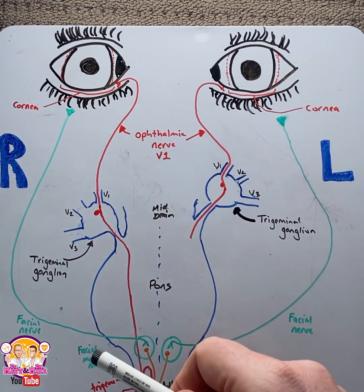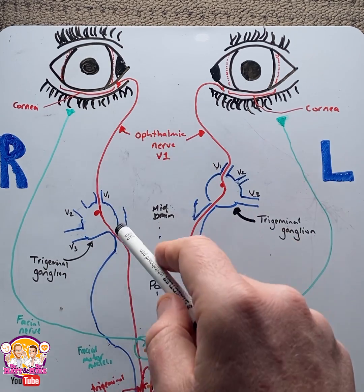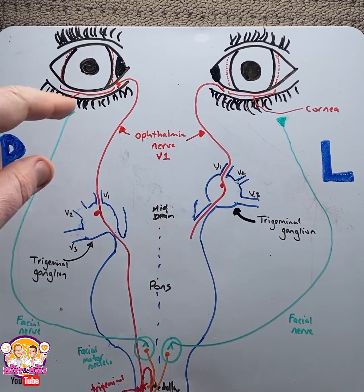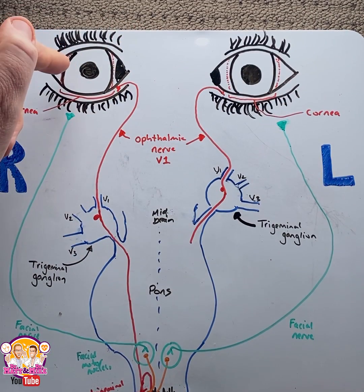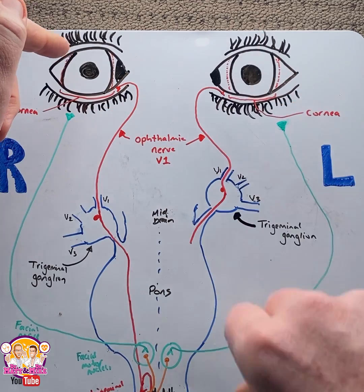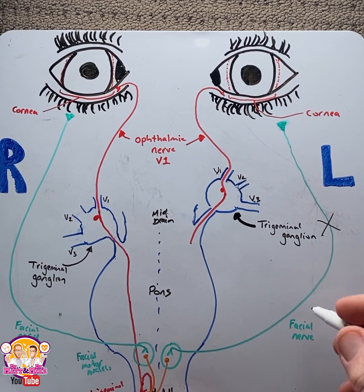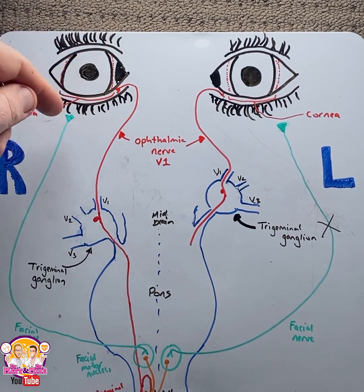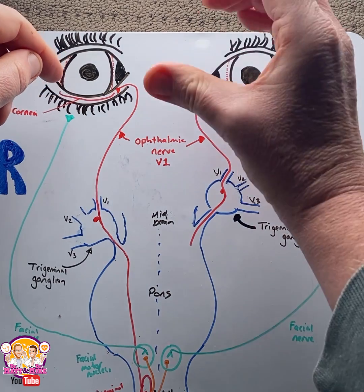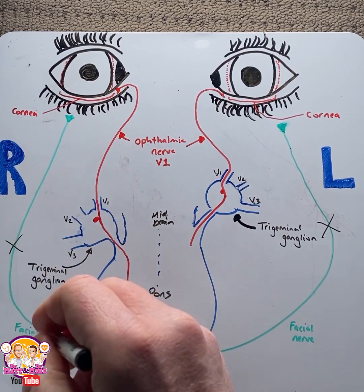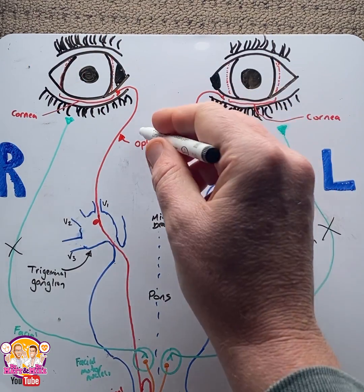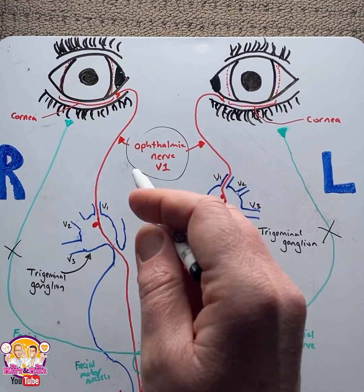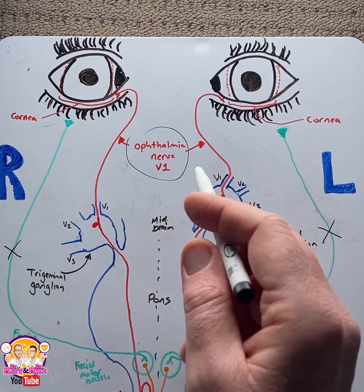Dysfunction of the corneal reflex may be due to a defect in the sensory or the motor component. When one eye is tested, both eyes should blink. When one side is stimulated and the opposite does not blink, the issue is in the contralateral facial nerve. When the right side is stimulated but only the opposite side blinks, the issue is in the ipsilateral facial nerve. A common facial nerve dysfunction is Bell's palsy. If neither eye blinks, the issue will be with the ophthalmic nerve, which could be seen in a condition known as cavernous sinus syndrome.